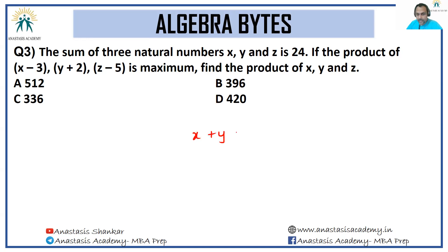x + y + z = 24, but we have been told the product of these three terms. So instead of writing x + y + z, let me write it as (x - 3) + (y + 2) + (z - 5).